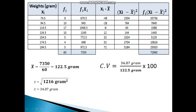The coefficient of variation is equal to standard deviation divided by x-bar, multiplied by 100. Standard deviation is 34.87 grams and x-bar is 122.5 grams. This gives 0.284 multiplied by 100, so the coefficient of variation is equal to 28.46%.